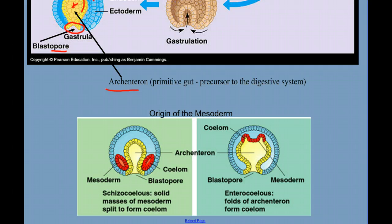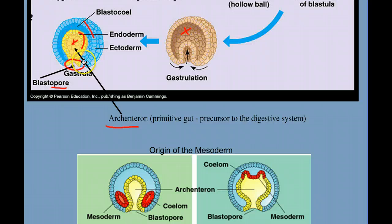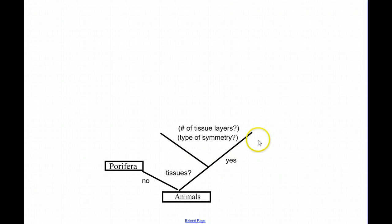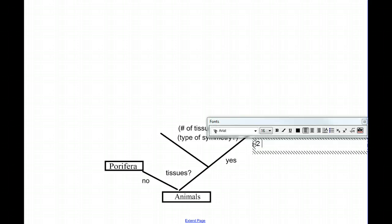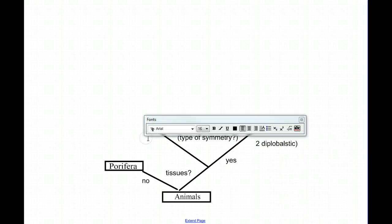Going back to our classification tree: if we determine that our animal has true tissues, the next question we ask is how many tissue layers — two (endoderm and ectoderm) or three (endoderm, mesoderm, and ectoderm)? Animals with only two germ layers we call diploblastic. Animals with three germ layers we call triploblastic.